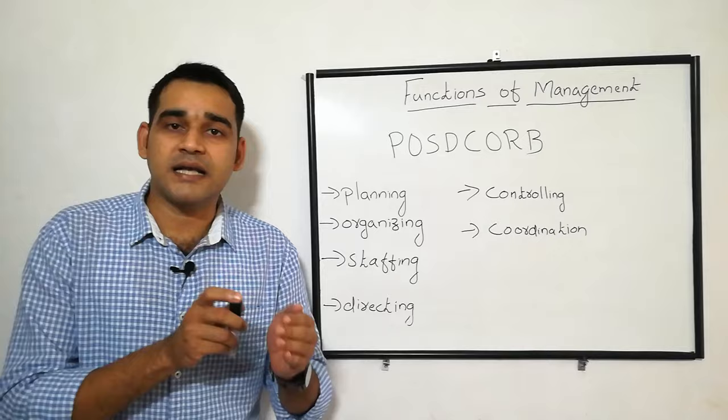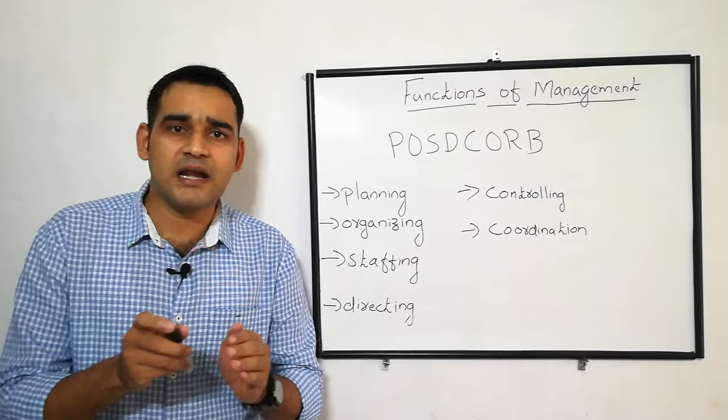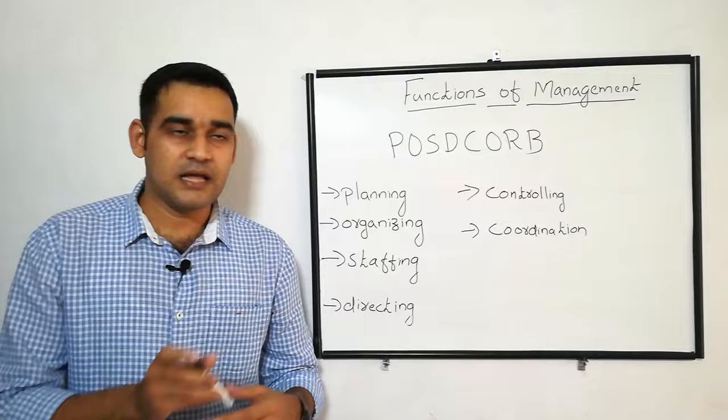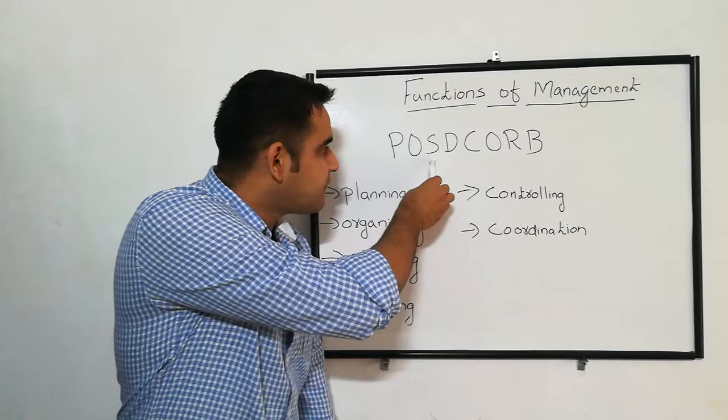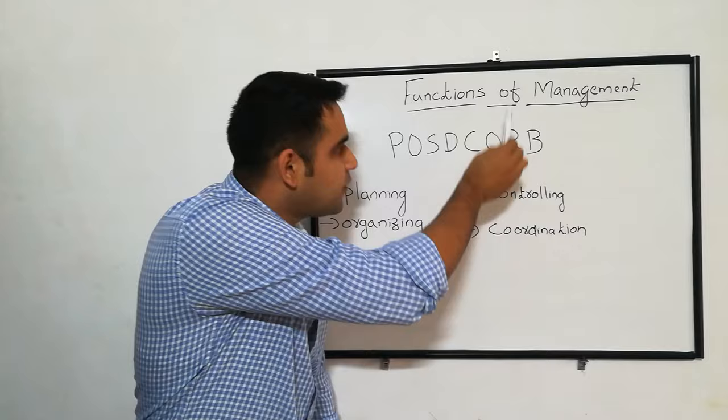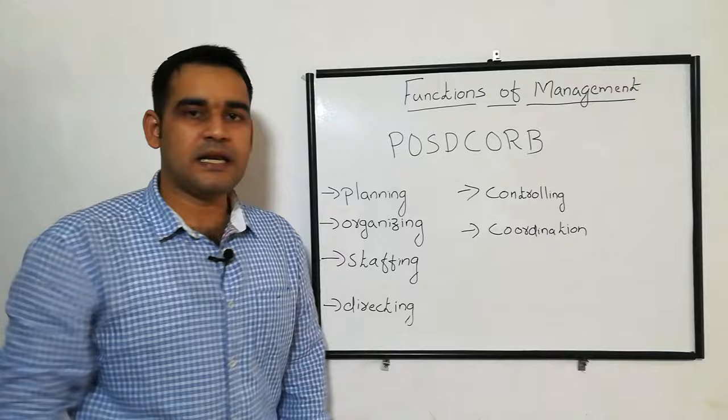Still, the most widely accepted functions of management is given by Luther Gullick — that is POSDCORB. It is a mnemonic. P stands for planning, O stands for organizing, S stands for staffing, D stands for directing, C stands for coordination, R stands for reporting, and B stands for budgeting. Here, R and B — that is reporting as well as budgeting — will come under controlling.